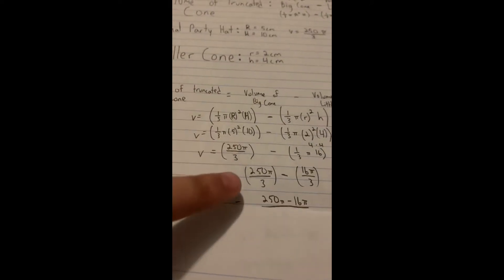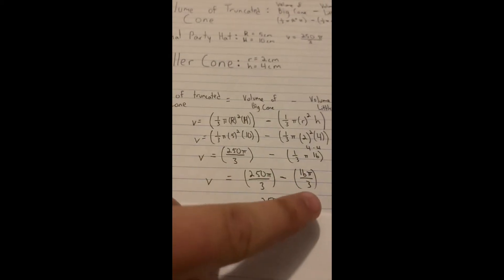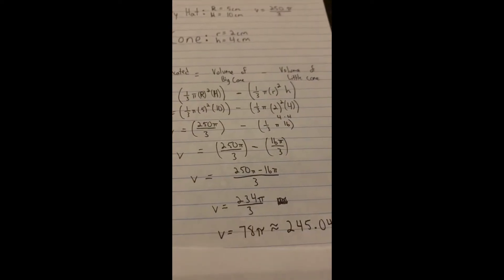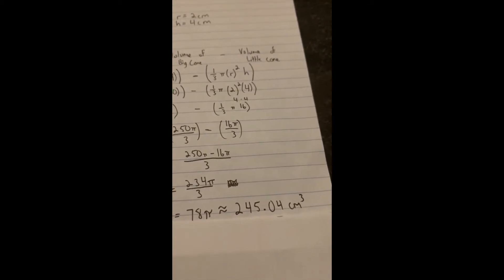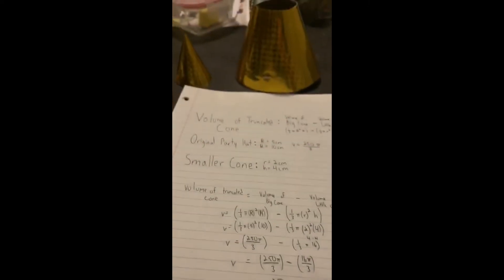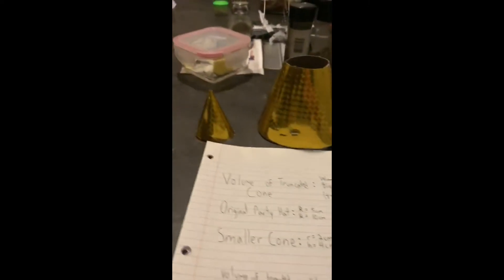That gives 16π/3 for the small cone. Now I subtract: 250π/3 minus 16π/3. Since they have the same denominator, I can combine them to get 234π/3. Simplifying, 234 divided by 3 is 78, so the volume is 78π, or approximately 245.04 centimeters cubed. That's how you find the volume of a truncated cone when you have all the information.